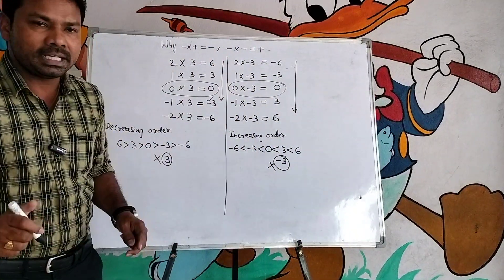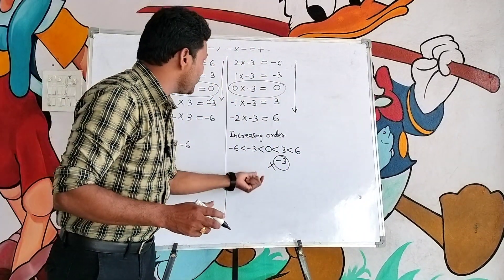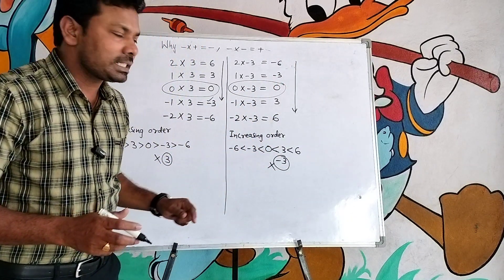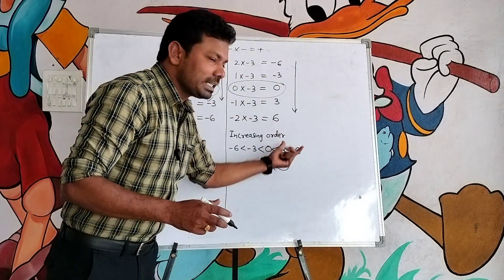Plus into minus, the answer is minus. If you multiply with three, minus three, see the results: minus six, minus three, zero. It is in increasing order. The next result, one more thing is increasing order.